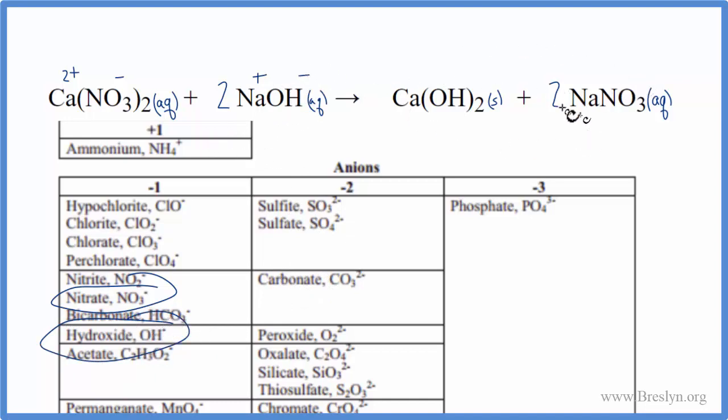So these are easy to do now. We know that Ca is 2+. Hydroxide is negative. Sodium is plus. And then the nitrate is negative.